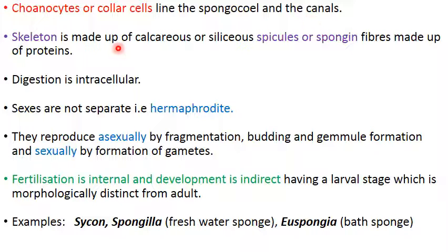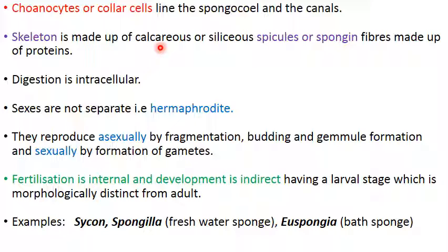The skeleton of sponges is made up of spicules and spongin fibers. Spicules are spine-like structures made of either calcareous material (calcium carbonate) or siliceous material (silica). Spongin fibers are made of proteins.